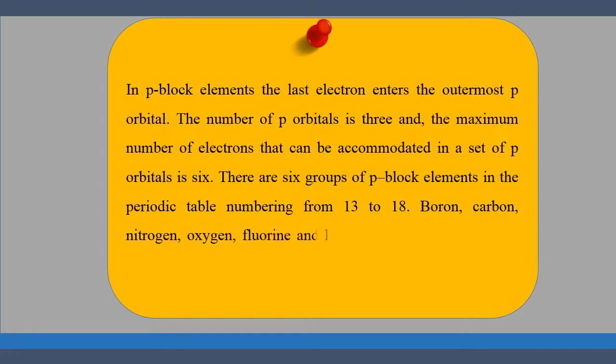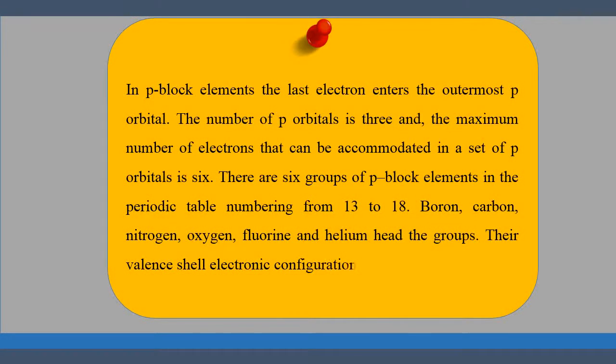Boron, Carbon, Nitrogen, Oxygen, Fluorine and Helium head the groups. The valence shell electron configuration is ns² np¹⁻⁶.